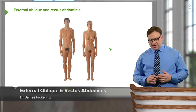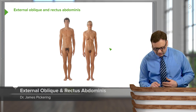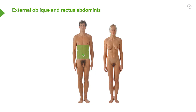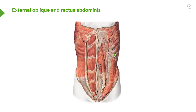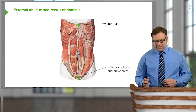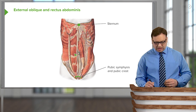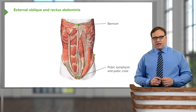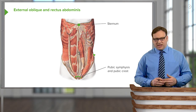Looking at this region in more detail, we're concentrating on the abdominal cavity in both the male and female. We're stripping away the skin to look at the musculature underneath. We can orientate ourselves with the xiphoid sternum superiorly and the pubic symphysis and pubic crest inferiorly. We can see a whole arrangement of muscles here, including rectus abdominis and musculature on the lateral aspect. Let's go through these muscles individually.